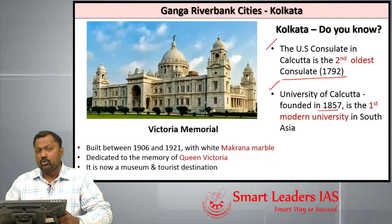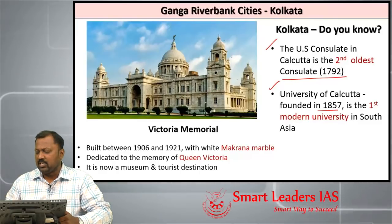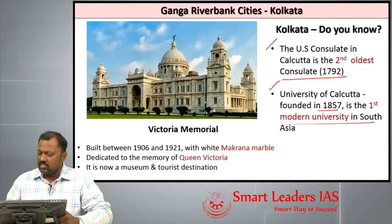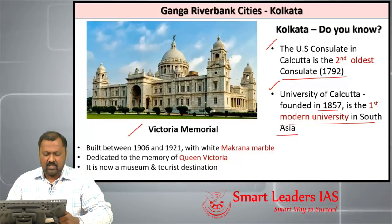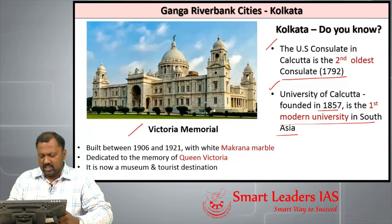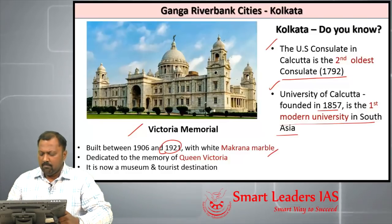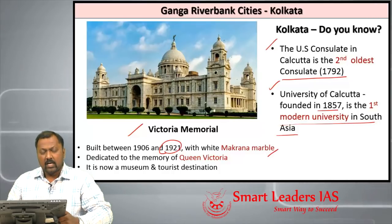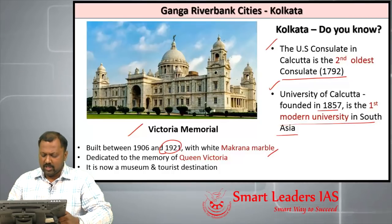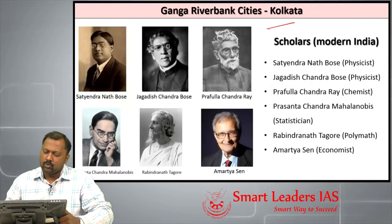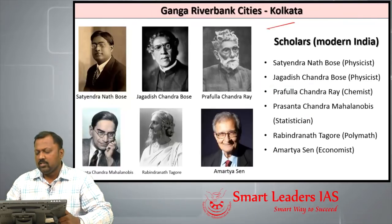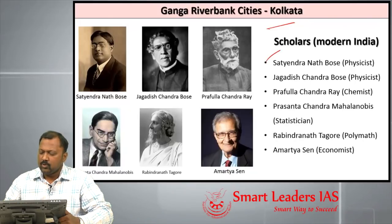The University of Kolkata was founded in 1857 — the same year as the Sepoy Mutiny — and is the first modern university in the whole of South Asia. Victoria Memorial was built during the time of Lord Curzon, completed in 1921 using Makrana marble, dedicated to the memory of Queen Victoria. It is now a museum and famous tourist destination in Kolkata.